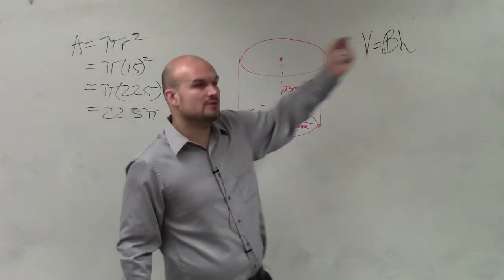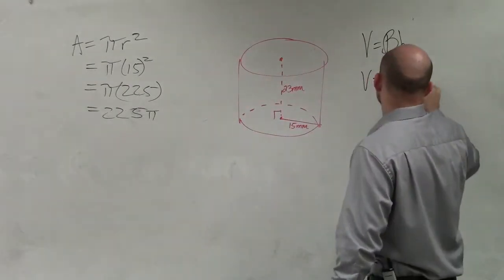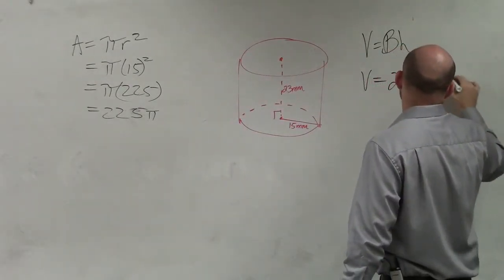Then I need to multiply it by my height, which is 23. So I have 225 pi times 23.